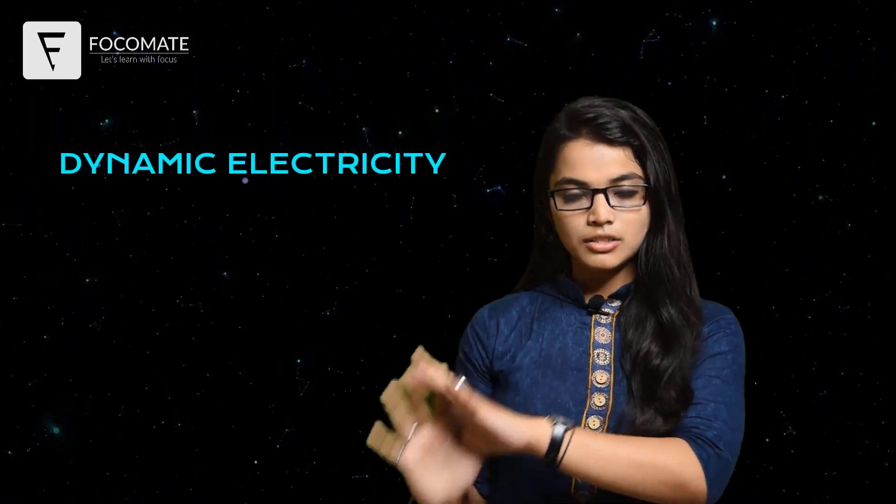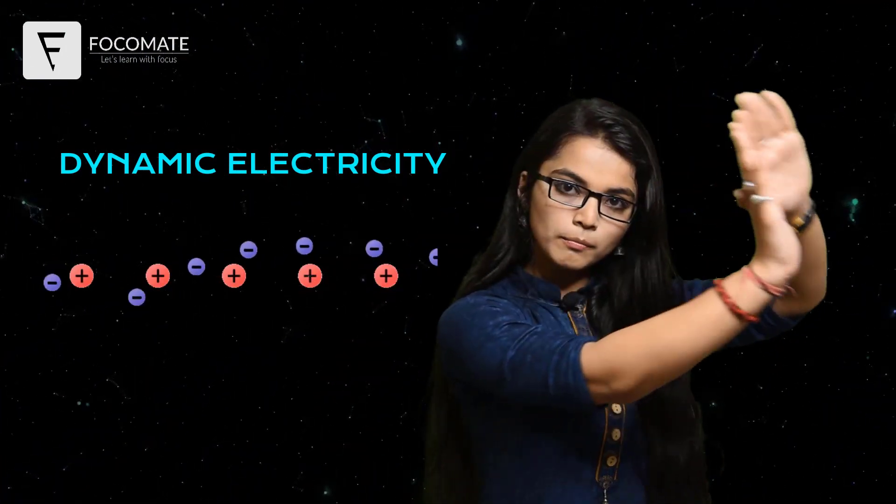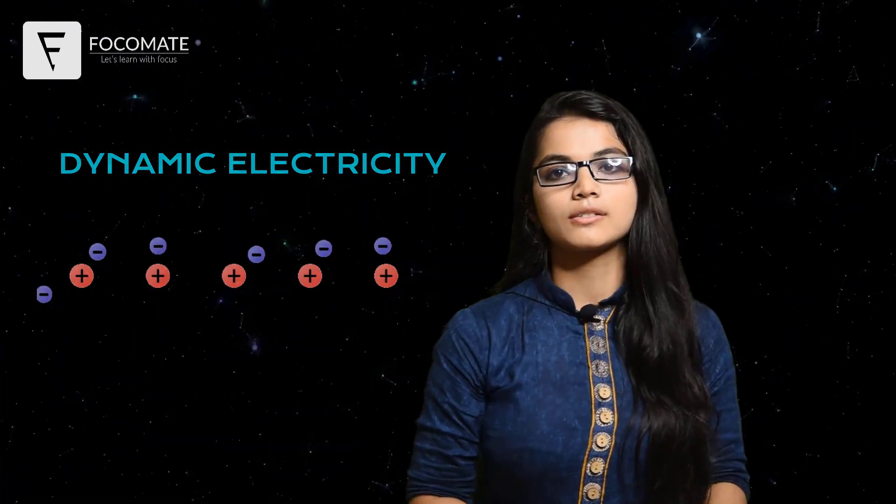Static electricity is when the electrons or charges stay in one place. In dynamic electricity, the charges move from one place to another. We only need to consider dynamic electricity because tube lights, fans, and everything else operate only through dynamic electricity, not static electricity.